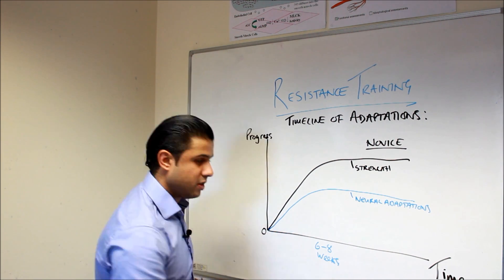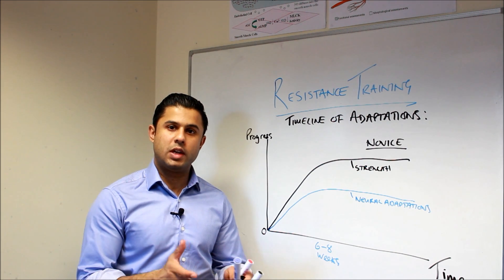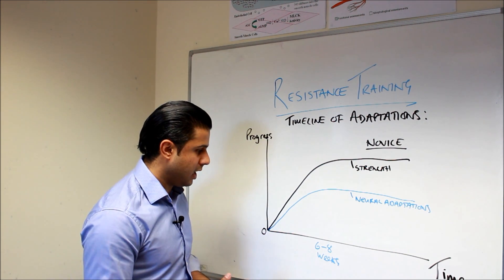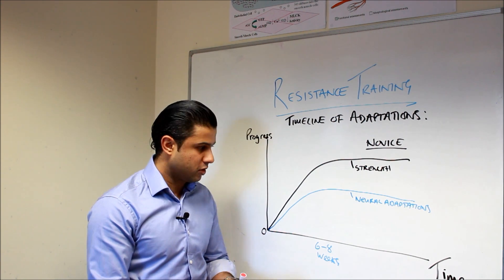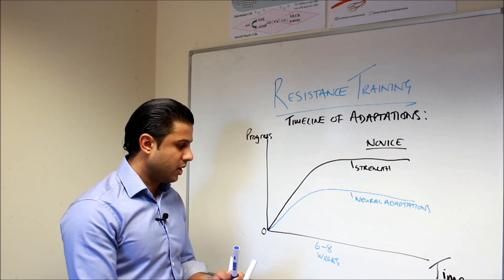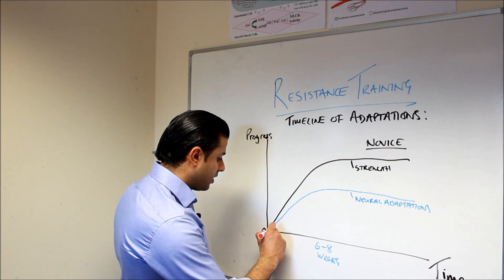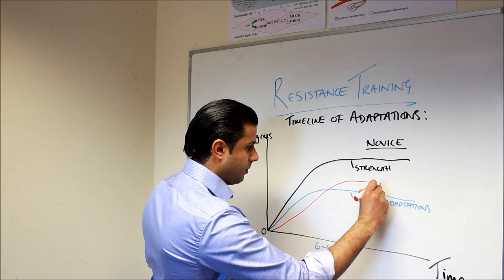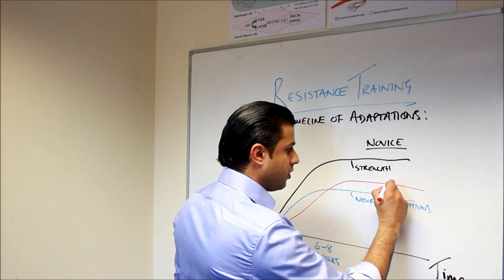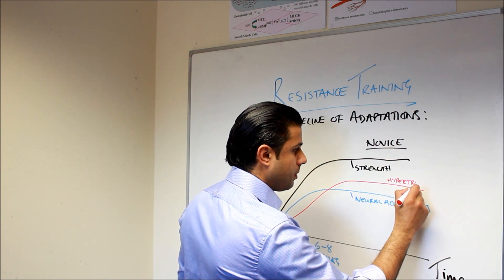So when you embark on resistance training at the beginning, each week you will see an improvement in strength, you will see an improvement in the weight that you can lift, and that's largely down to the neural adaptations which we'll talk about in just a moment. But then at some point after six to eight weeks, what we actually start to get is hypertrophy. So the red is hypertrophy, muscle hypertrophy.